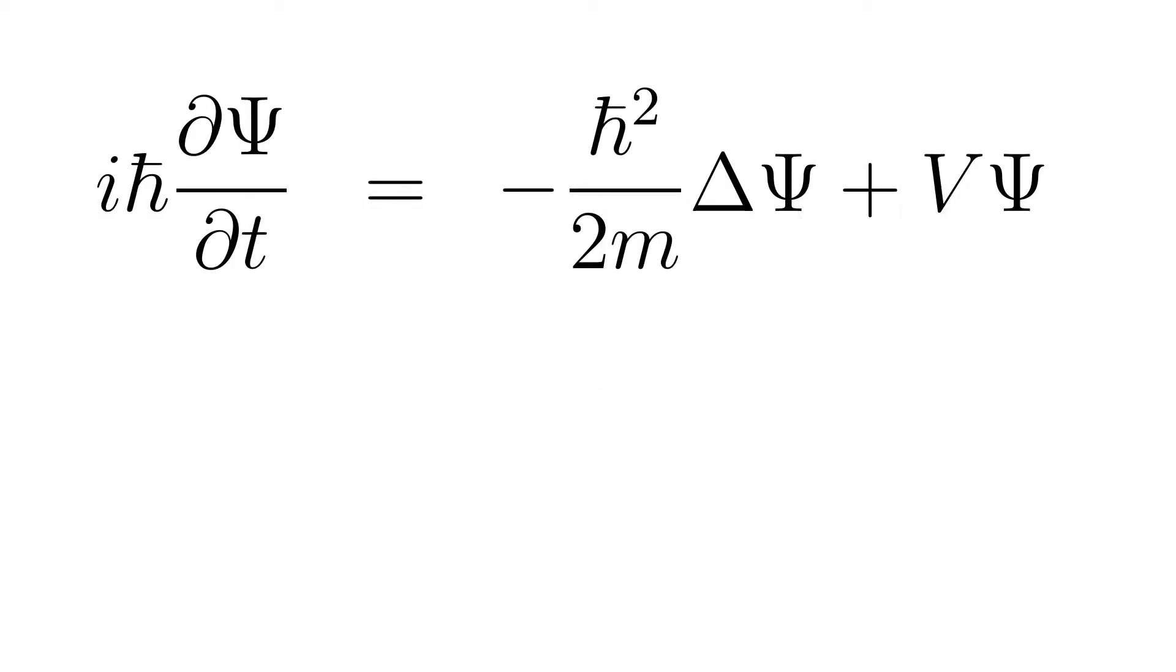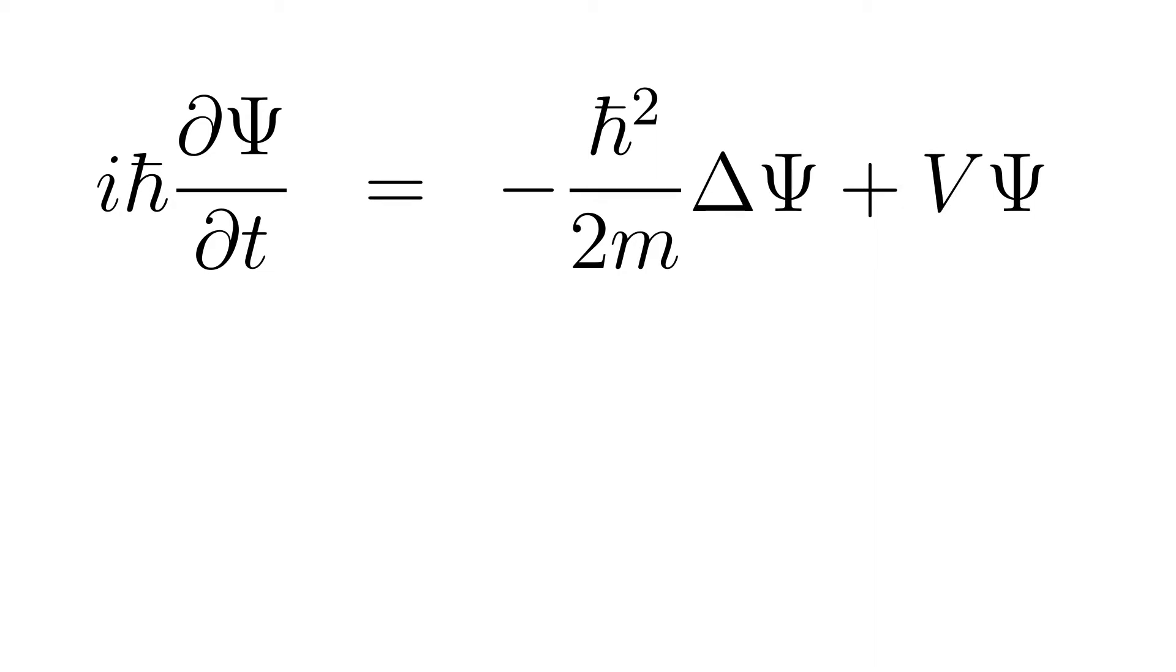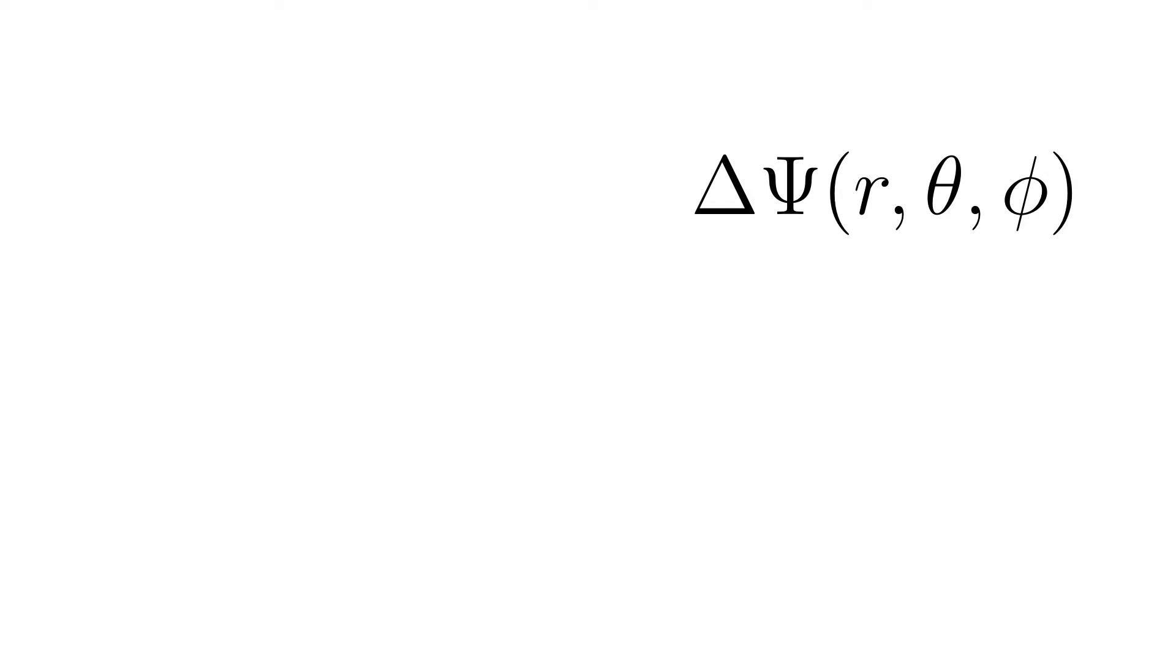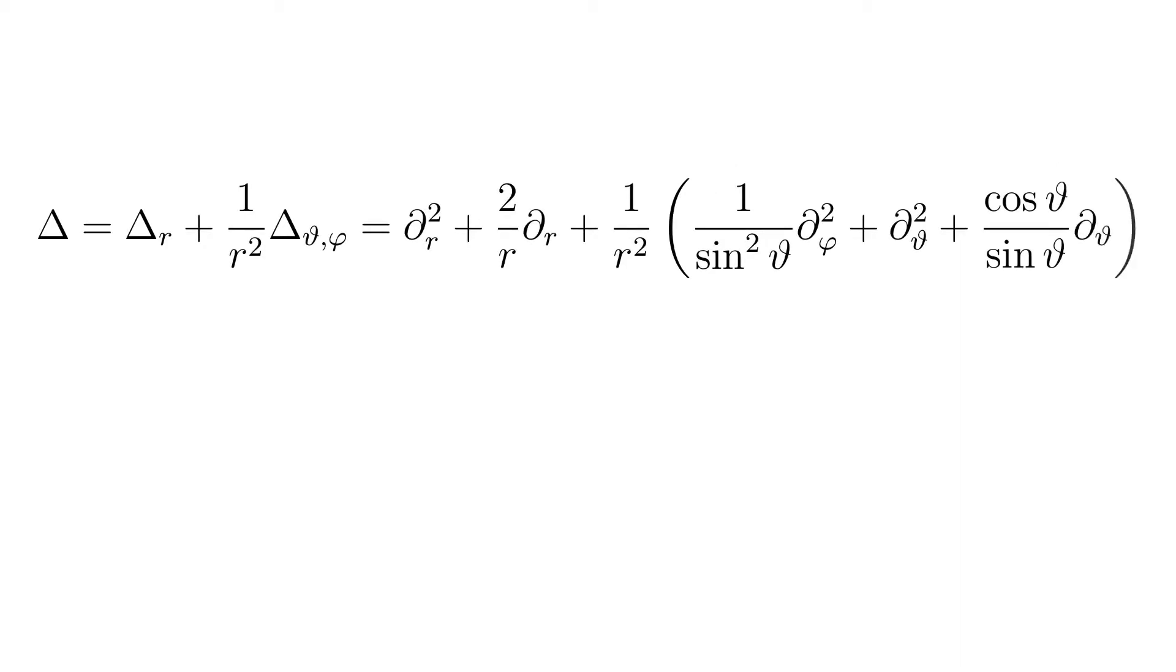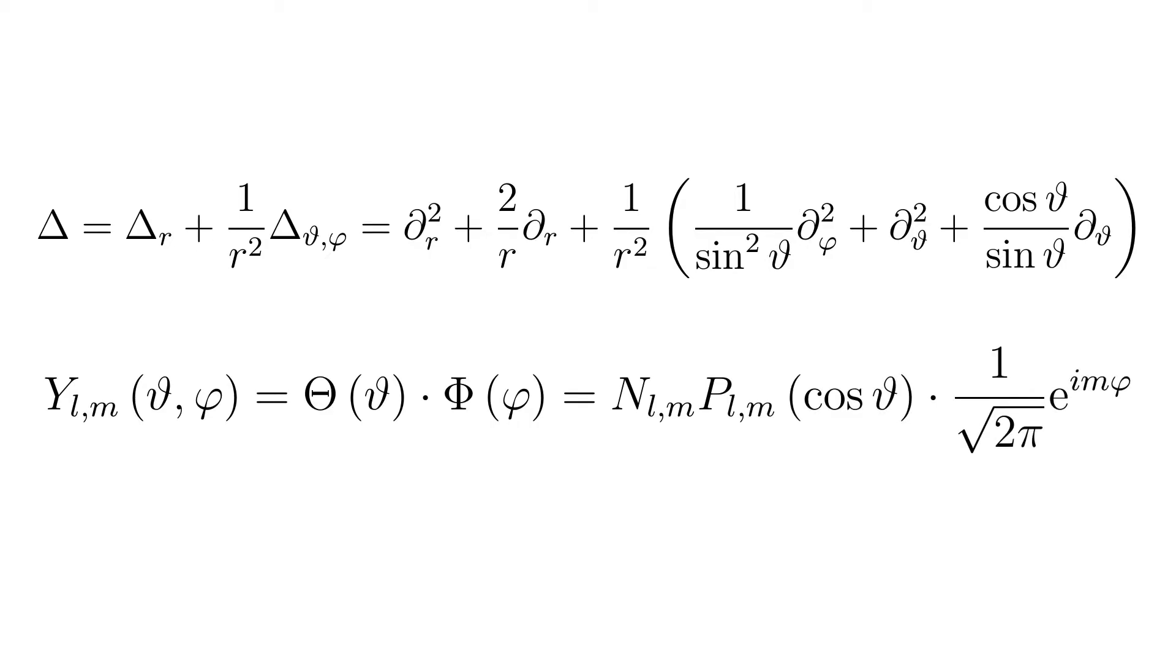The spherical harmonics are defined as a complete and autonomous set of eigenfunctions of the angular component of the Laplace operator. Delta equals delta r plus 1 over r squared delta theta phi equals the partial derivative of r squared plus 2 over r partial derivative of r plus 1 over r squared times 1 over sine of theta squared times the partial derivative of phi squared plus the partial derivative of theta squared plus cosine of theta over the sine of theta times the partial derivative of theta.